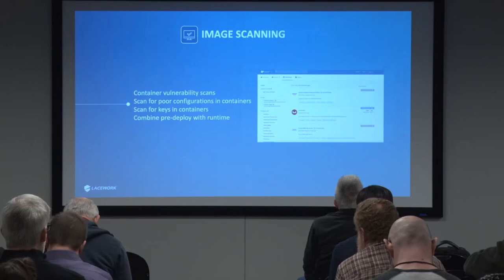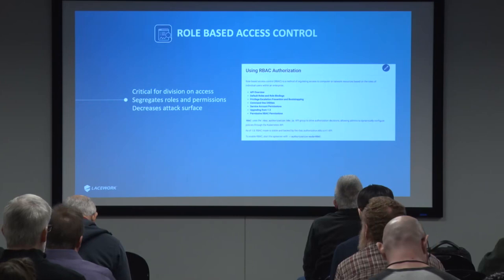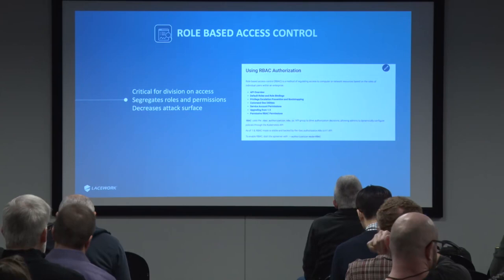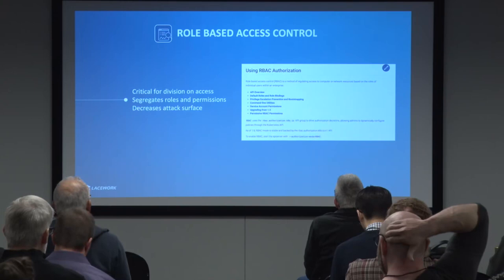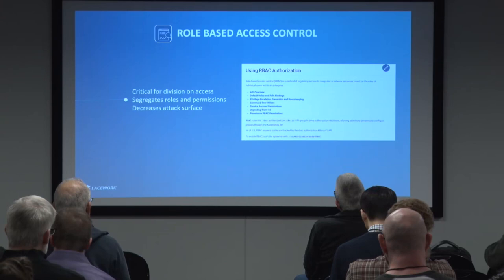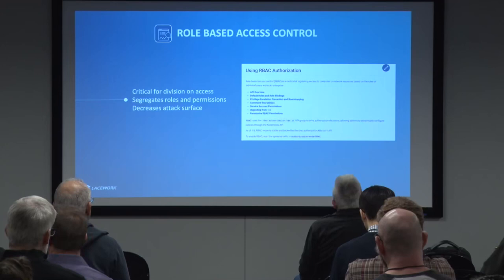Number two is RBAC — Role-Based Access Control. This is a relatively new feature in Kubernetes. It allows you to create divisional access to clusters, nodes, and namespaces in a way that diminishes your attack surface. You can segregate roles and permissions. It's pretty easy to set up, and it may be on by default now — Kubernetes changes fast. If you're running Kubernetes, check whether you have RBAC enabled.